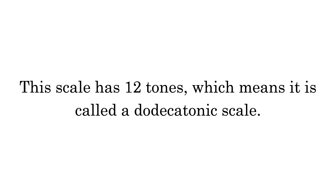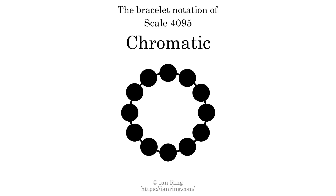This scale has 12 tones, which means it is called a dodecatonic scale. This is a bracelet notation diagram of scale 4095. The shaded circles represent tones that appear in the scale, and they are read clockwise, starting at the top.